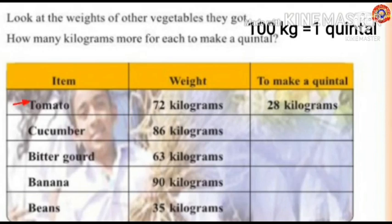Students, we know that 100 kilograms make a quintal. The weight of tomato is 72 kilograms. How many more kilograms are needed to make a quintal? To find out, subtract 72 from 100: 100 minus 72 equals 28. To make a quintal, 28 kilograms are needed.